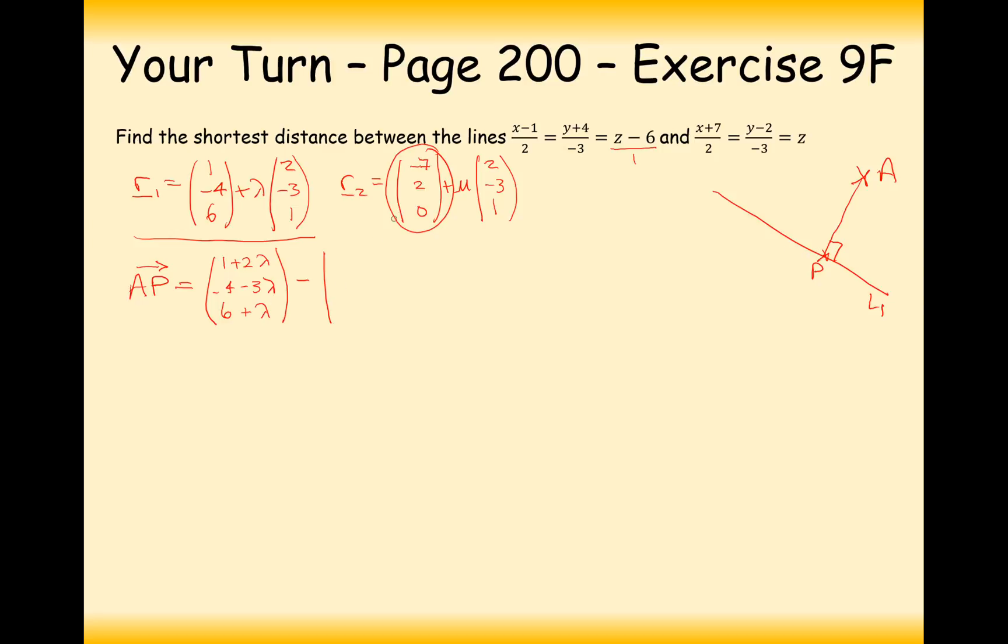So it's going to be anywhere along line 1 at the moment, so I'll have to give it this vector here: 1 plus 2 lambda, minus 4 minus 3 lambda, and 6 plus lambda. So that's the position of P. Now I've got to take away the position of A, so that's minus 7, 2, 0. And this is going to give me 8 plus 2 lambda, minus 6 minus 3 lambda, and 6 plus lambda.